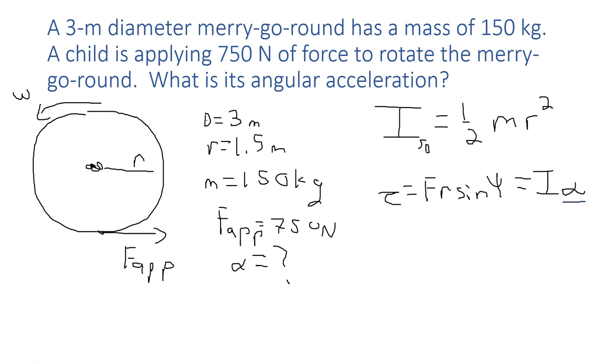What we wanted to solve for is acceleration, so let's go ahead and solve for acceleration. Angular acceleration equals force times lever arm times sine of the angle between them divided by the moment of inertia of the rotating object, which is the merry-go-round.